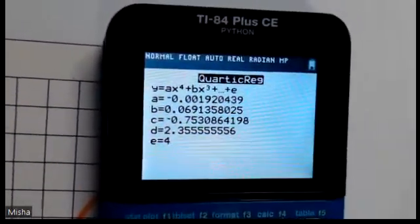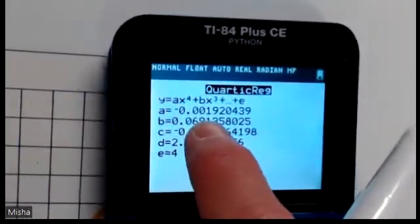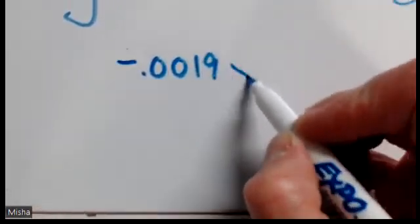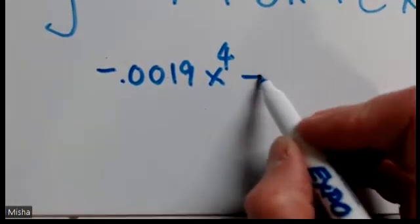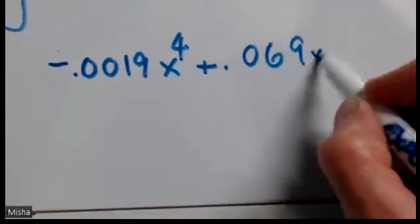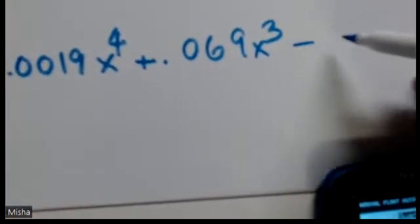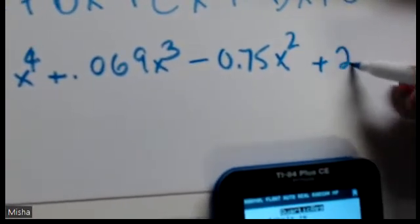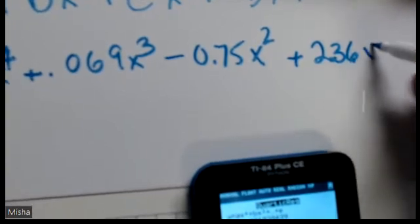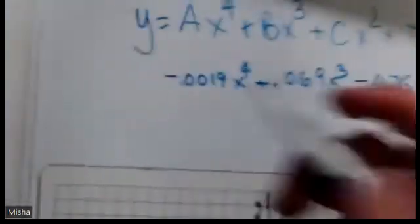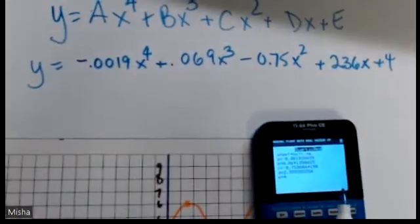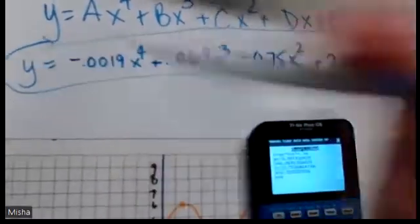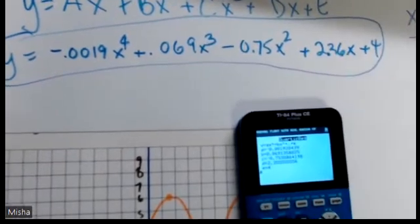Okay, now, so the A is negative 0.019. I'm going to write negative 0.019x to the 4. Then the B was 0.069x to the 3. The C was a negative. The D was 2.3, we'll just round it to 2.36. And this was 4. And we just put y equals. So this would be the equation of that quartic. Thank you.